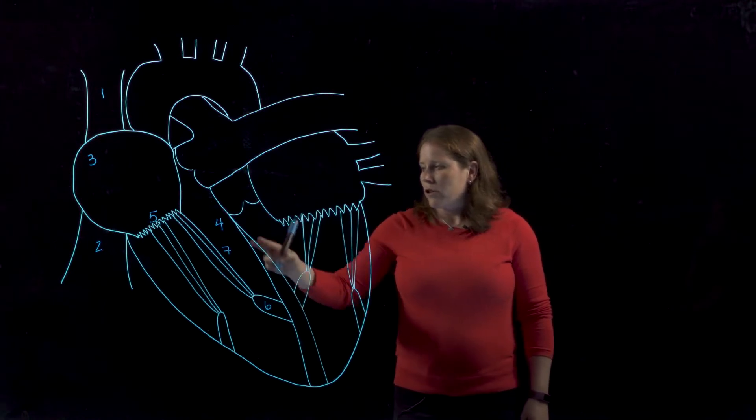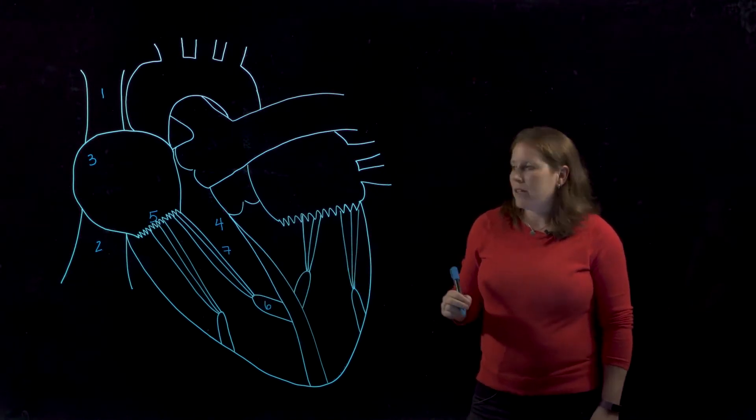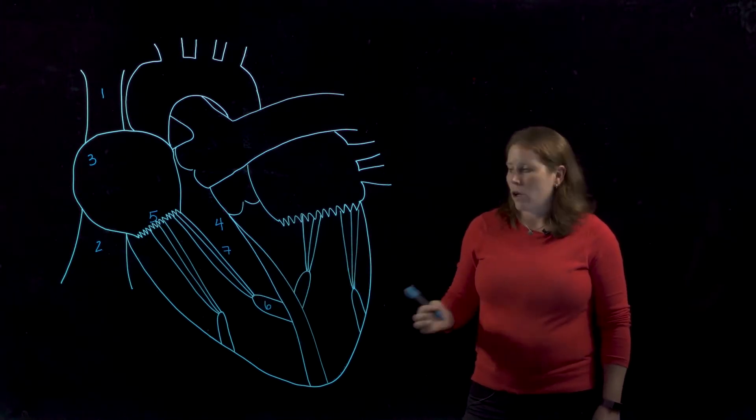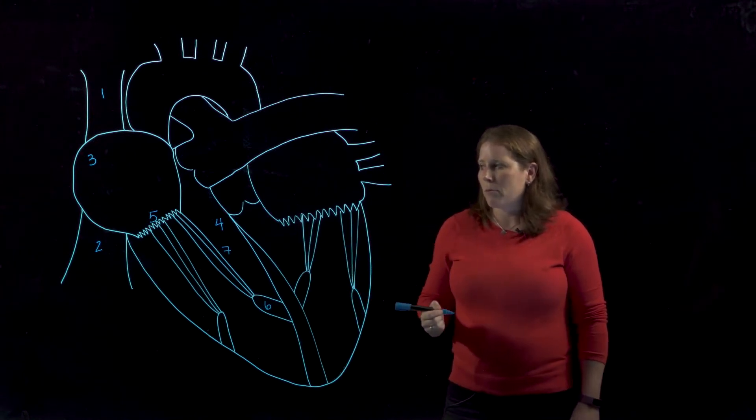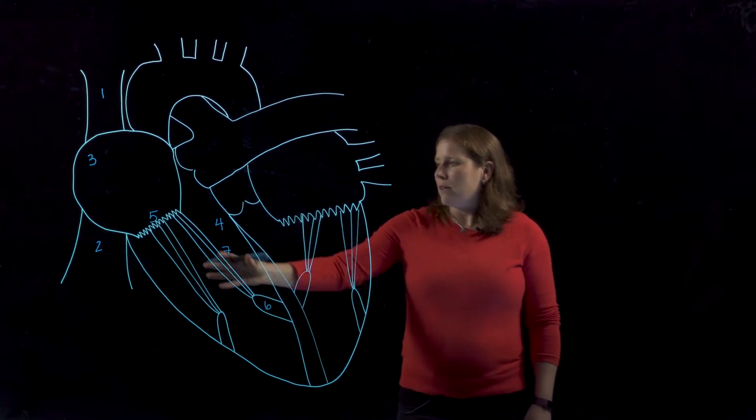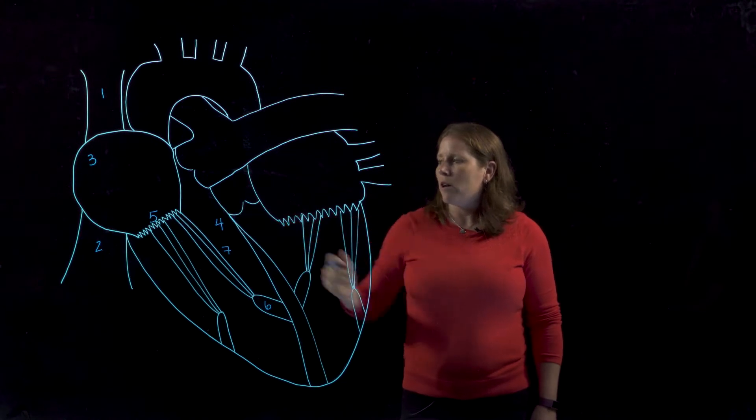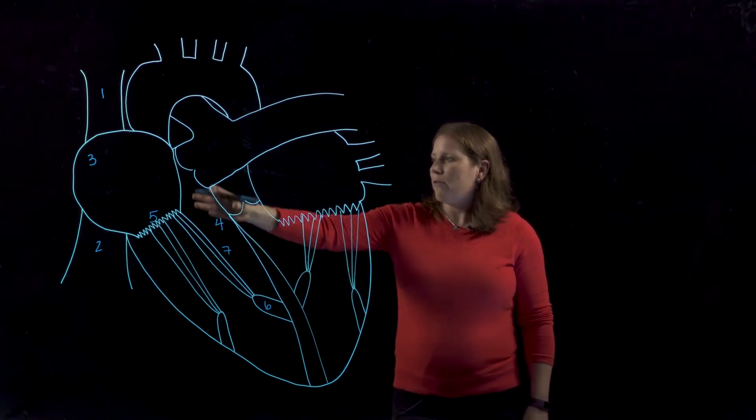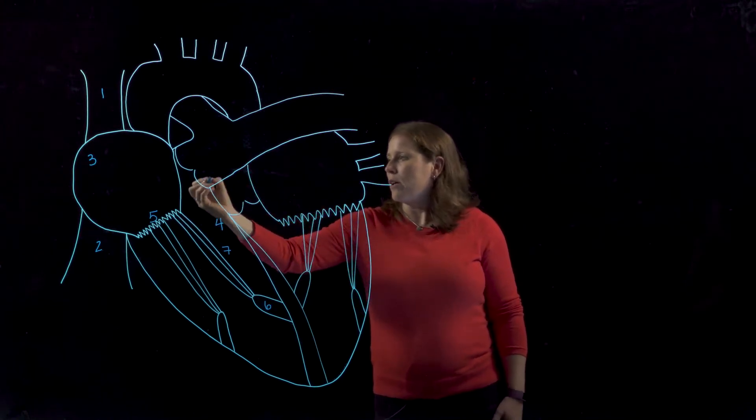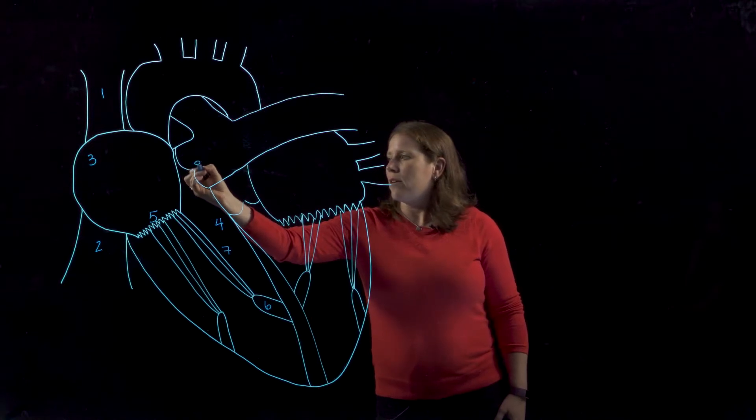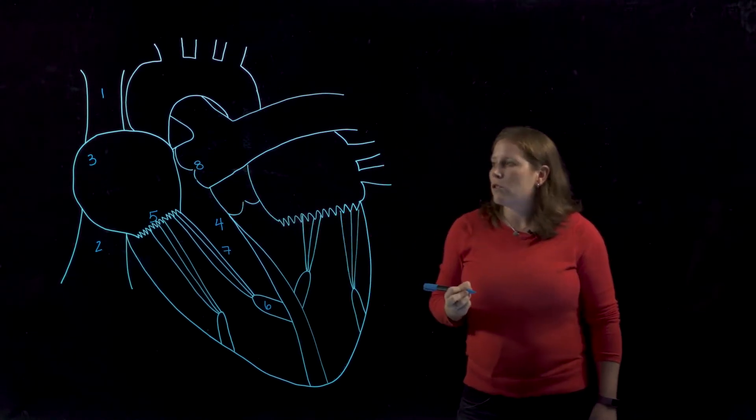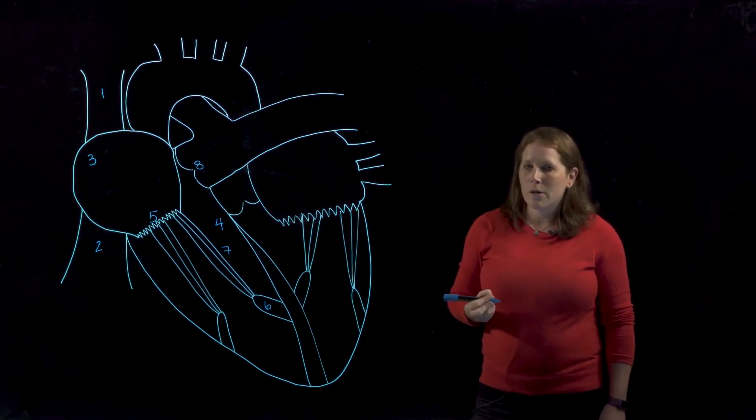The anatomical structure of that valve prevents it from flipping inside out when the ventricles contract from the bottom up and so that does not allow blood to backflow into the atrium but rather forces blood up through this valve here, number eight, which is going to be our pulmonary semilunar valve.